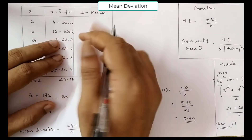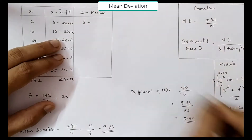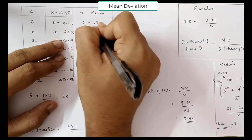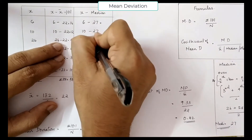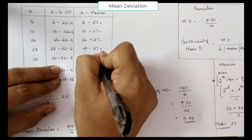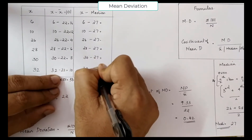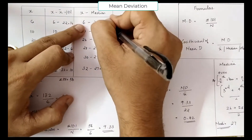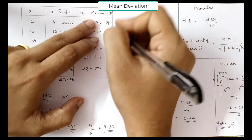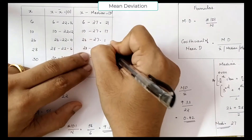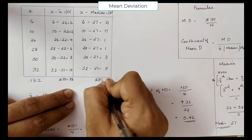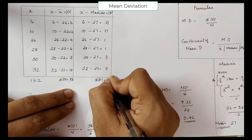Now we are trying to find X minus median. We compute: 6 minus 27, 10 minus 27, 26 minus 27, 28 minus 27, 30 minus 27, 32 minus 27. When you get a negative sign, ignore it because we are finding the modulus. The results are 21, 17, 1, 1, 3, 5. Adding all these gives sigma D equal to 48.